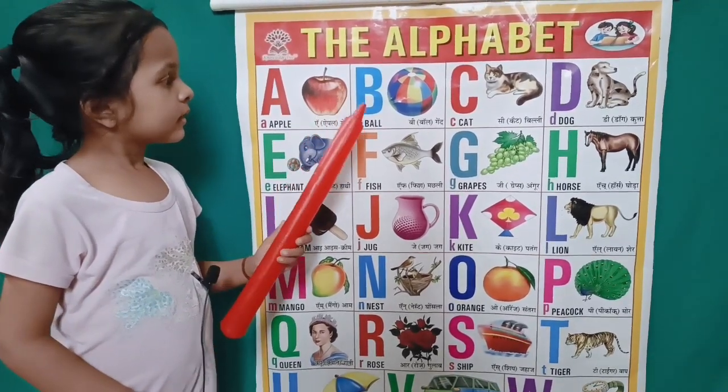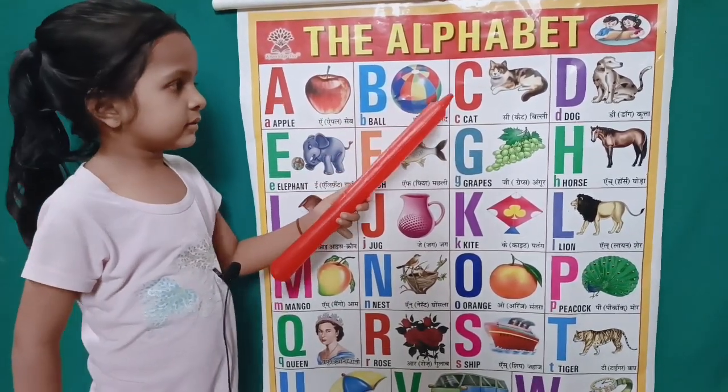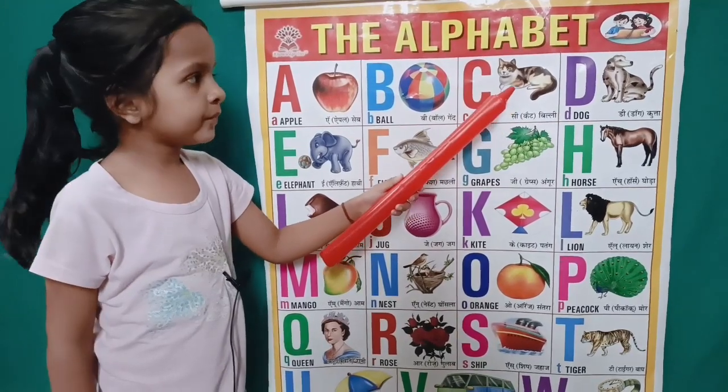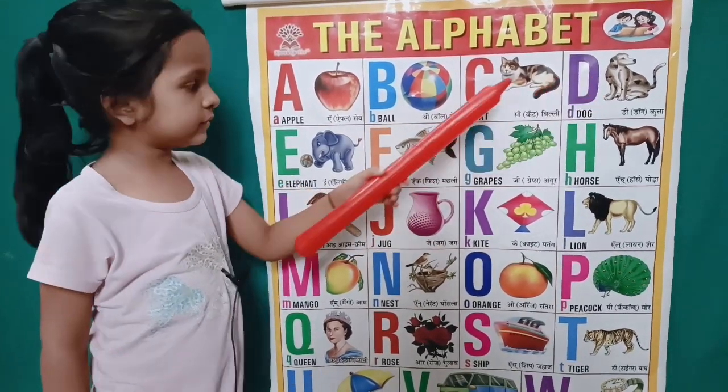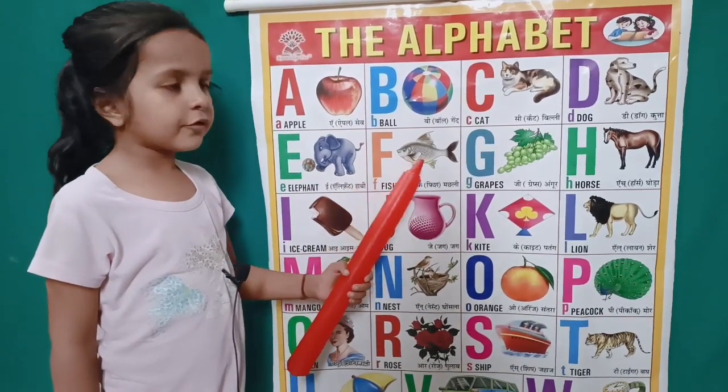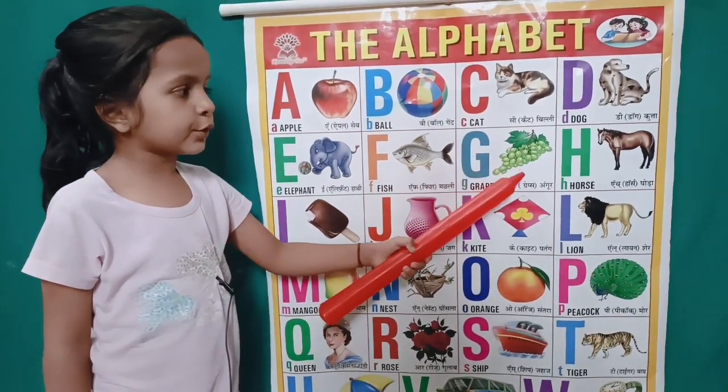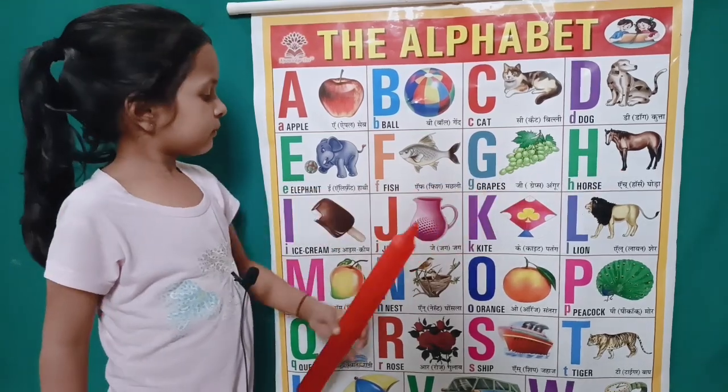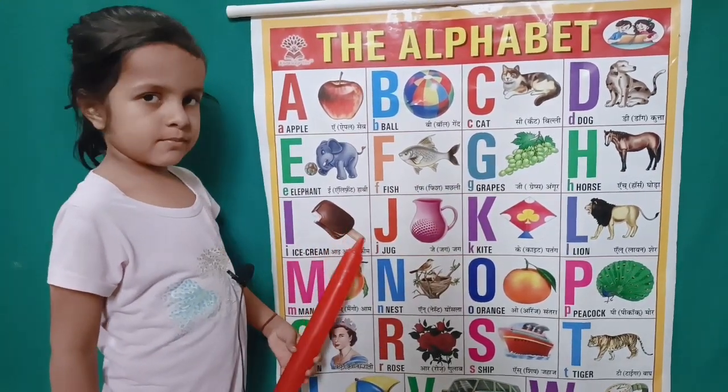A for apple, B for ball, C for cat, D for dog, E for elephant, F for fish, G for grapes, H for horse, I for